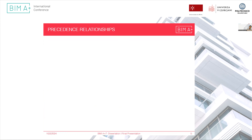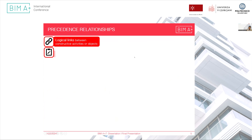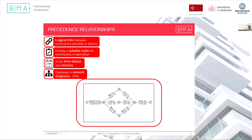In this dissertation, we are focusing on one part of the planning analysis: the precedence relationships. What are precedence relationships? They are logical links between constructive activities or objects. In the example provided on the screen, conditioning the second floor column to be built before its overlying beams is a good example of precedence relationships. They are important because they are responsible for finding a suitable order for either the construction or the demolition of buildings. They are crucial because they avoid time delays, reworks, and consequently cost overruns. In the past, they were displayed in network diagrams such as the critical path method, but nowadays they are directly assigned into Gantt charts.